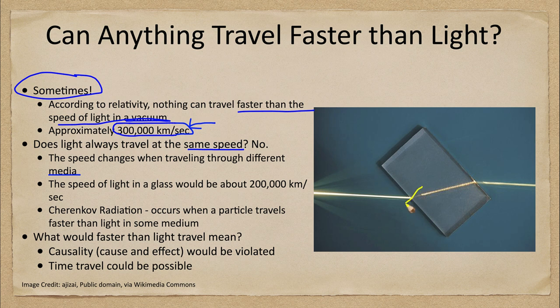As the light heads into the block of glass, it gets twisted toward the perpendicular — it ends up getting closer to the perpendicular line than it was before. That is a sign that the speed of light slowed down in that glass. When it comes out, it gets a slightly larger angle and it speeds up. So the speed can change when you are going through different types of objects.